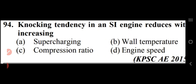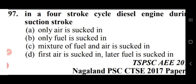Knocking tendency in an SI engine reduces with increasing engine speed — option D. This question has also been asked in SSC. In a four-stroke cycle diesel engine during suction stroke, only air is sucked in — option A. In a diesel engine only air is sucked in, while in an Otto cycle engine, a mixture of air and fuel is sucked in.